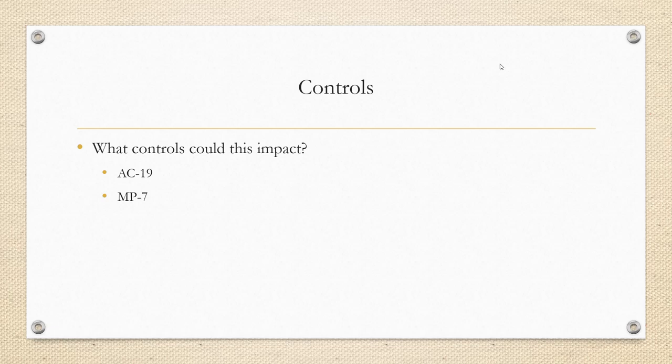Just a couple of controls to call out — I'm sure there are many more within NIST 800-53 that are impacted by mobile devices, but I wanted to specifically highlight two: AC-19, which is all about access control for mobile devices, and MP-7 as well. Just something to look at and base your own research and arguments on mobile devices on. It's definitely a good place to start. Thanks for tuning in to another episode.